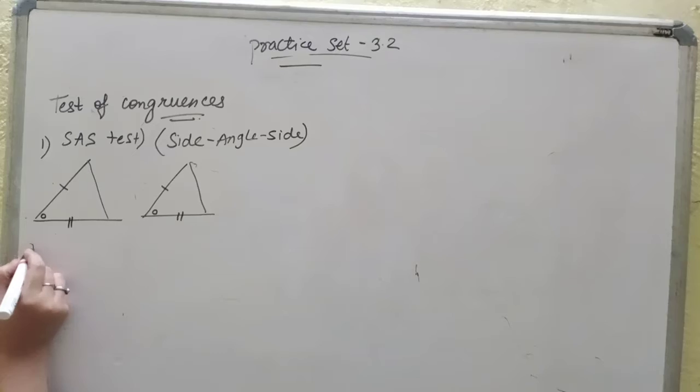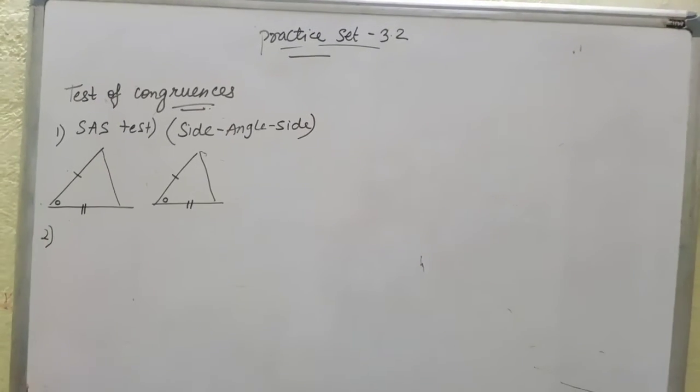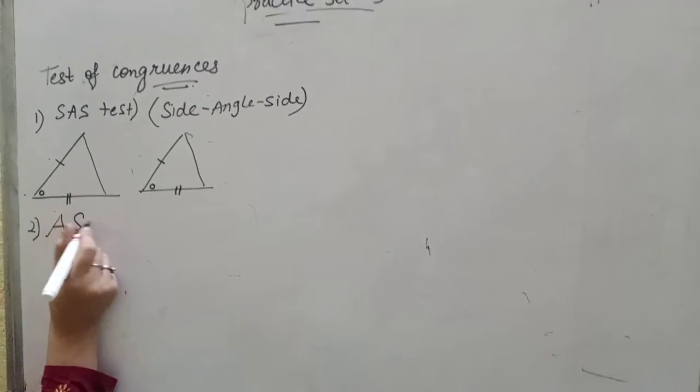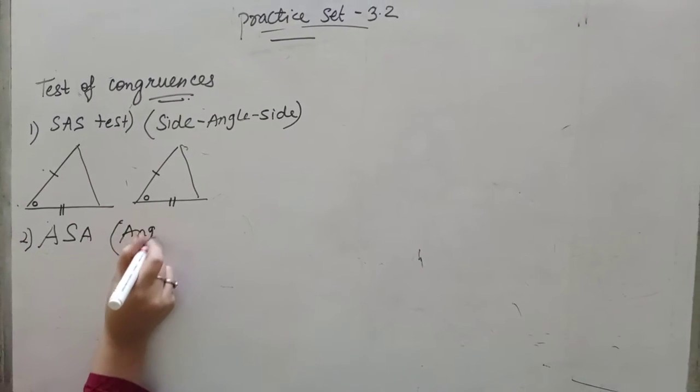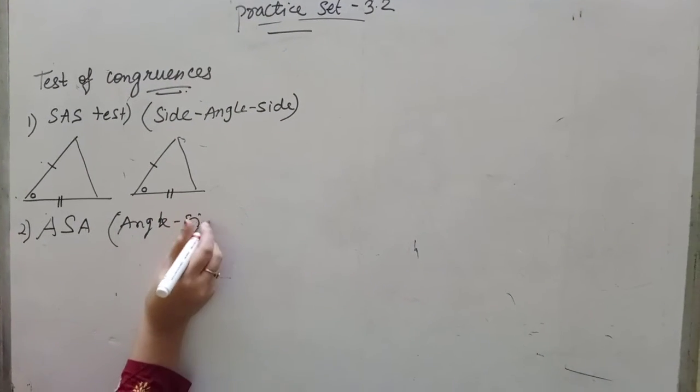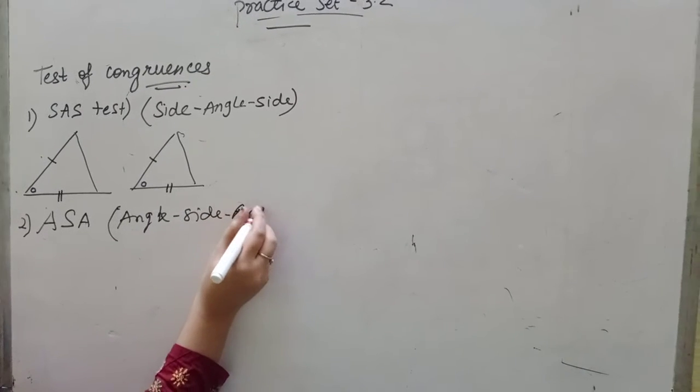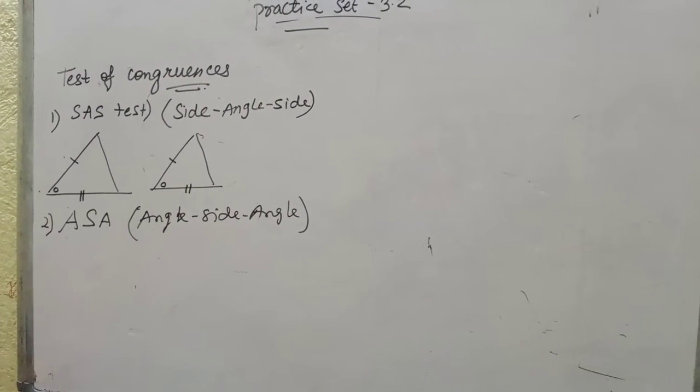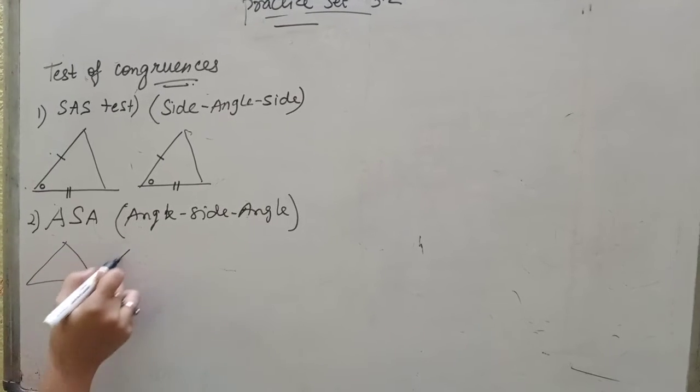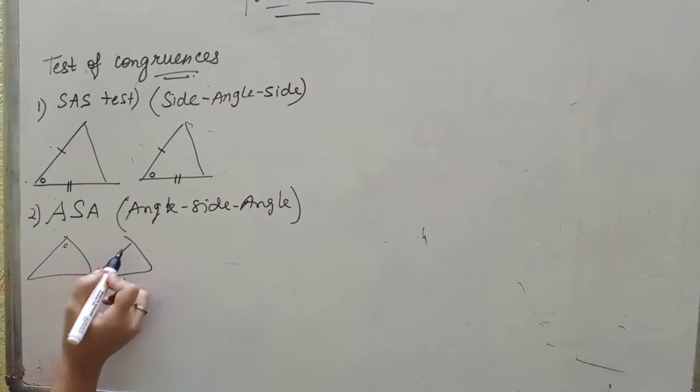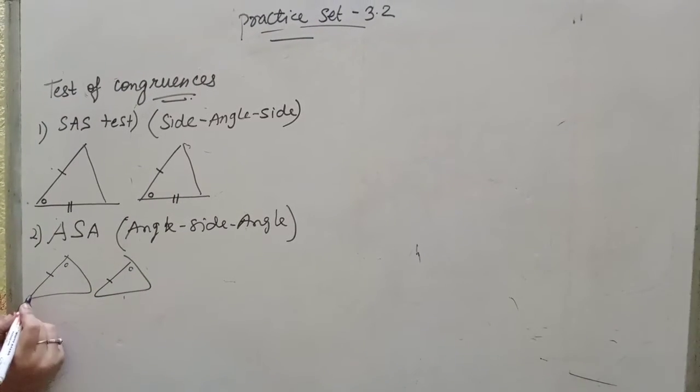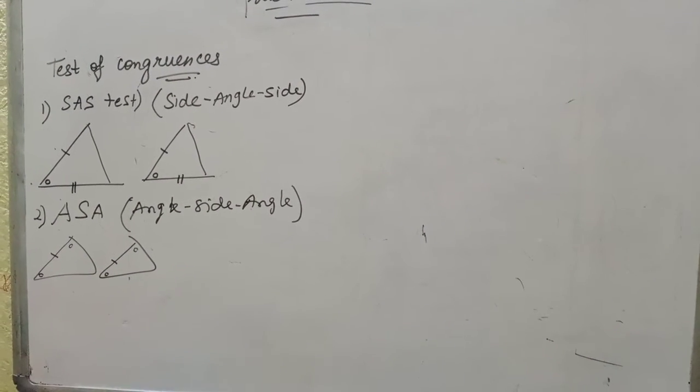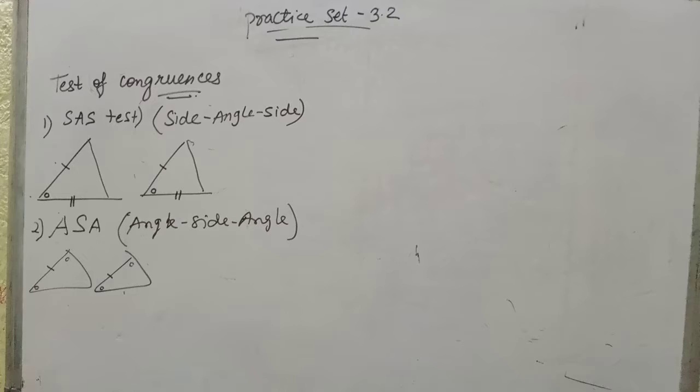The second one will be ASA test. What do you mean by this? ASA: Angle-Side-Angle test. In this, two triangles are given. First angle is similar to another, side is similar to another side, and the angle is similar to another angle.